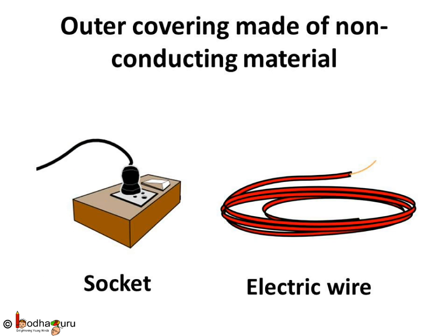Now it must be easy to understand why switches, electric plugs, and sockets are made of conducting materials — this is to pass electricity through them. Also, why the outer coverings of plugs, sockets, regulators, and even electric wires are made of insulators like rubber and plastic. These are the parts which people might touch, and the insulator safeguards us from electric shock. So we see, conductors and insulators are equally important for us.